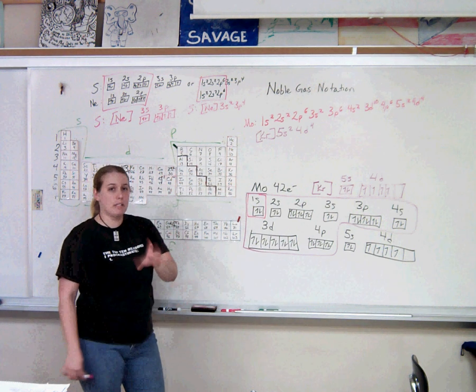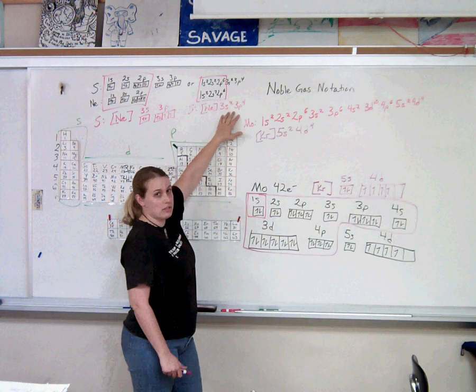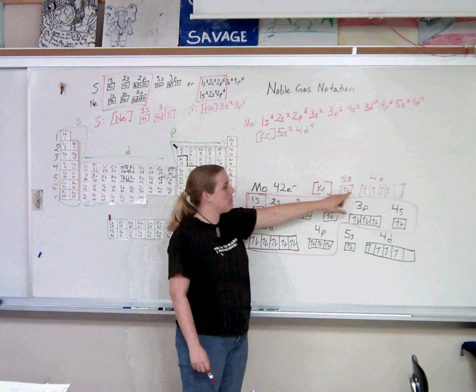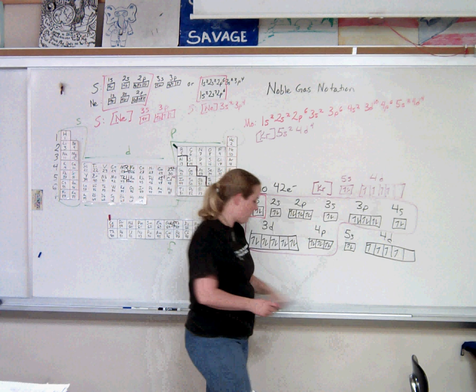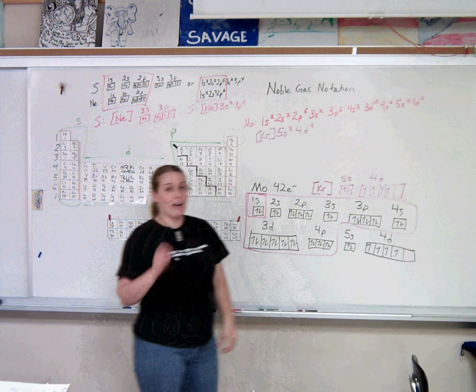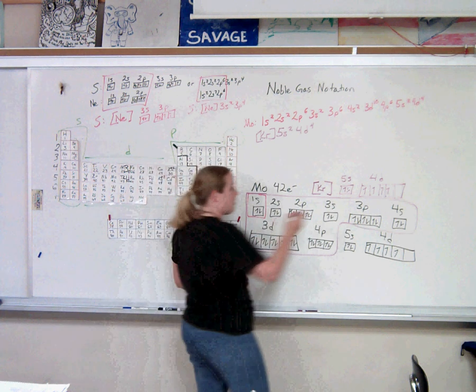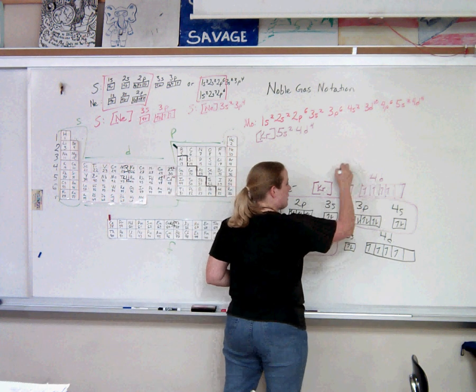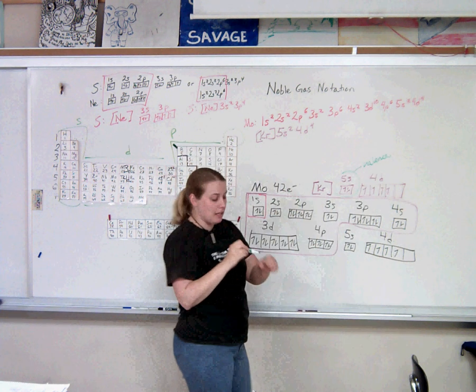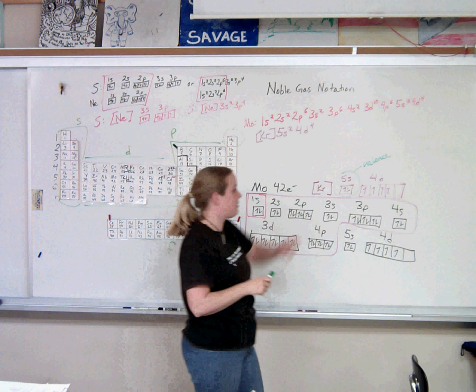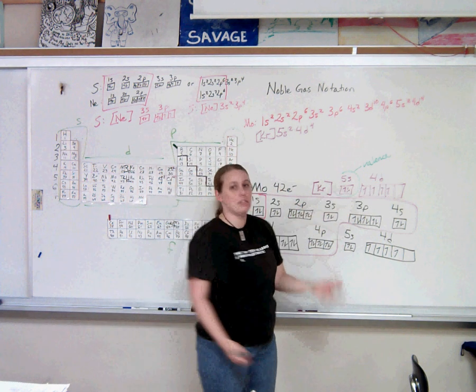Now, I apologize. I misspoke when I said these are the valence electrons. In the case of sulfur, those are the valence electrons. But in molybdenum, once you start hitting these 4d, anything in the d, these are not all the valence electrons. Valence electrons, remember, are in the highest energy level number. So therefore, the valence electrons of molybdenum are just these guys right here, because that is the highest energy. Energy level 5 is its highest. These guys are at energy level 4. They're not the valence electrons. So molybdenum has two valence electrons.